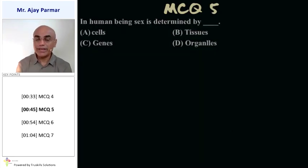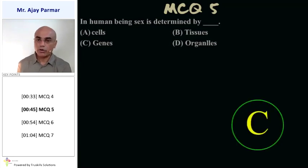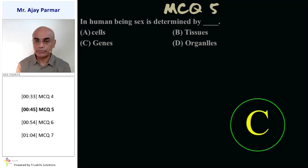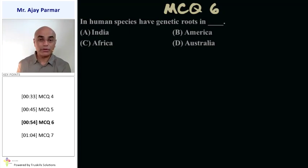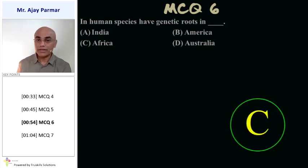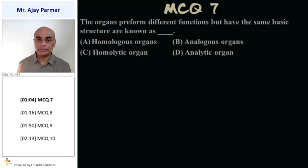In human beings, sex is determined by genes — option C. In human species, where do we have genetic roots? Africa, that is option C.